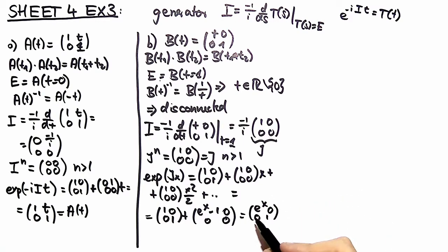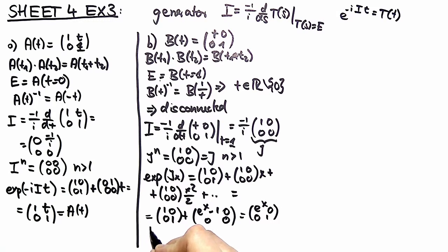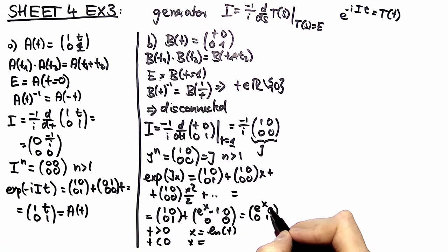Now in order to obtain our b of t's we have to choose for t greater than 0 and t smaller than 0 different axes. So we choose for t greater than 0 x being equal to the logarithm of t and for t smaller than 0 we have to multiply a minus 1. We have to extract a minus 1 and we get that by taking x being equal to i pi plus the logarithm of t.